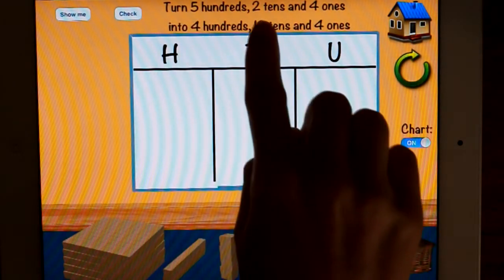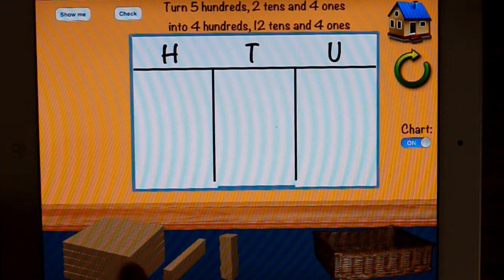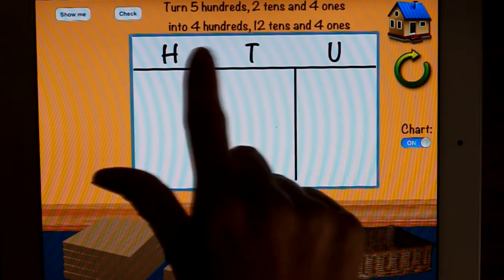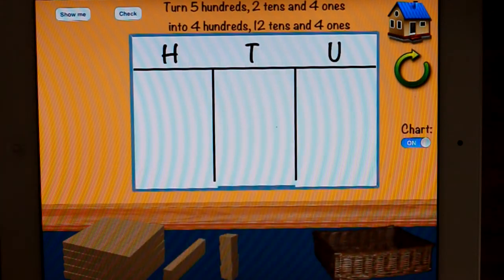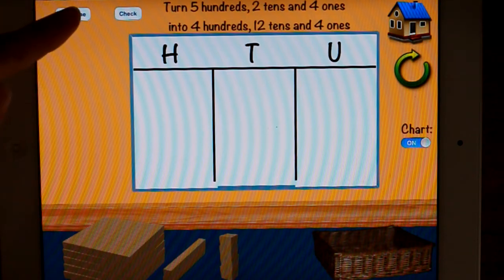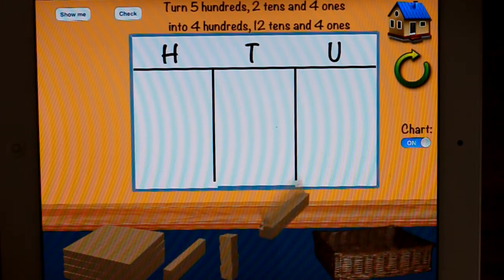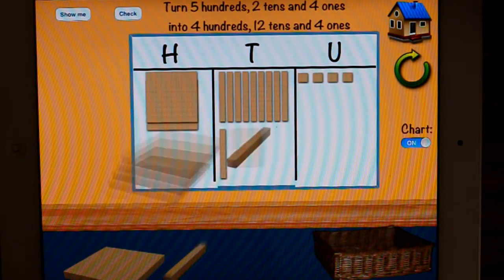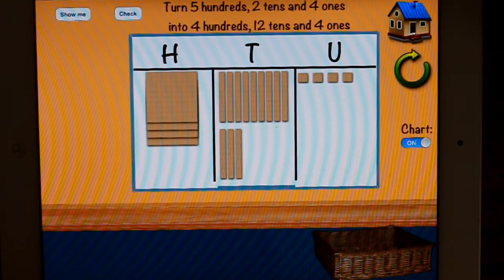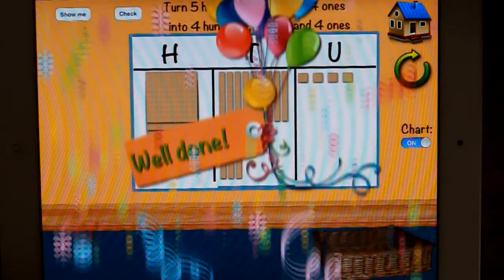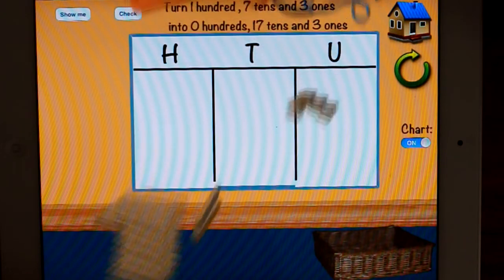There is this show me button which we haven't used before. Alright, so what it's asking you is turn five hundreds, two tens and four ones, which is what's down here, into four hundreds, twelve tens and four ones. So, I don't know what I'm doing. It doesn't make sense to me. Show me. Okay, there you go. So, it's actually showing me. If you press check now, it'll tell you that you've done a good job, but obviously you know you haven't.